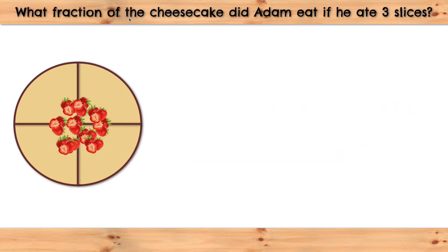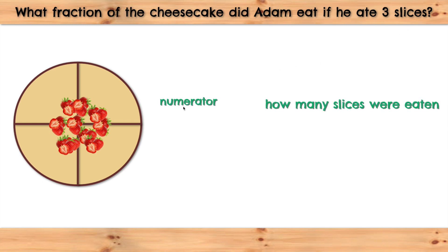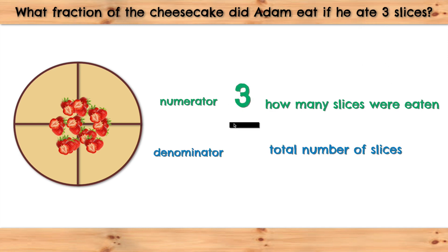What fraction of the cheesecake did Adam eat if he ate three slices? We need to figure out the numerator. Remember, the numerator stands for how many slices Adam ate. We know that he ate three slices. And now, we need the fraction bar.